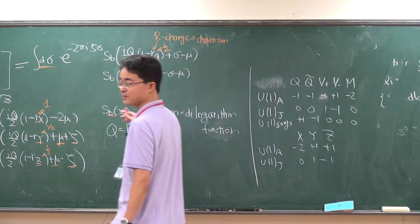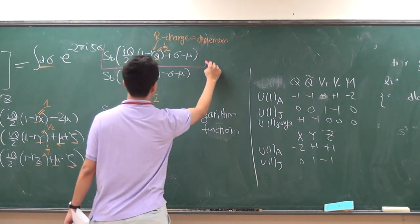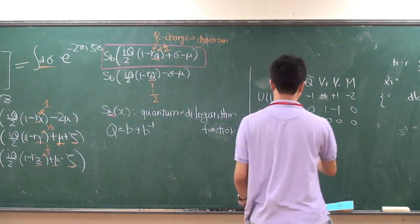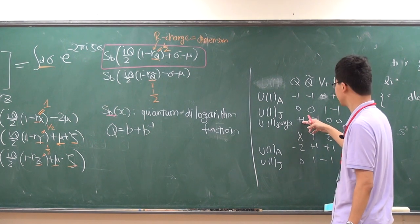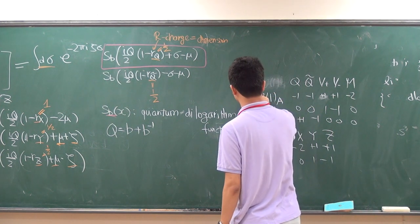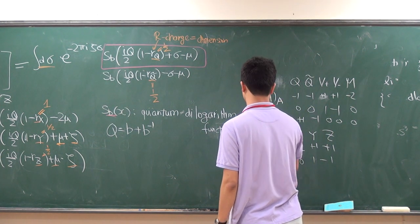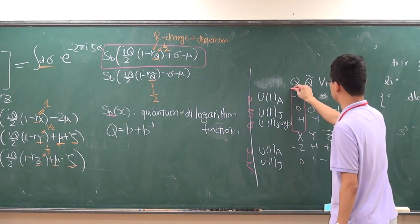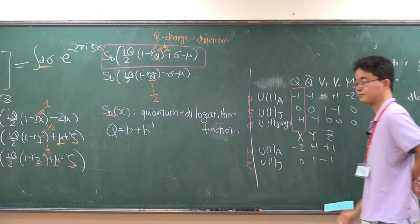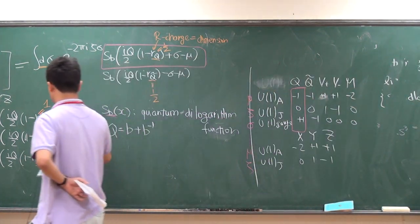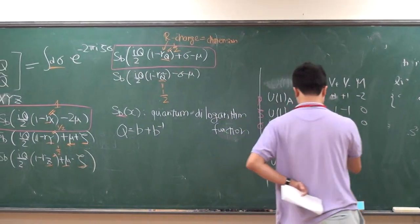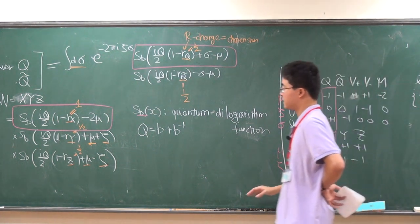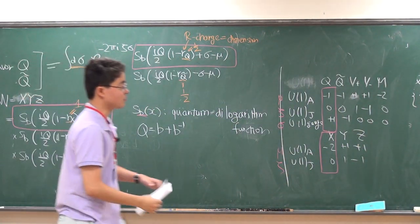So for example, there are five fields. Let's take Q for example. This one is supposed to represent Q. So what appears in the argument? Q has charge plus 1 at the gauge and minus 1 at the U(1)_A. And I have denoted the real mass parameter for this to be mu, to be zeta. And this is the vector multiplet scalar sigma. So for Q it's minus 1 times mu, which appears here, and plus 1 times sigma. And X is charged only minus 2 in the axial — that's why you have minus 2 here.